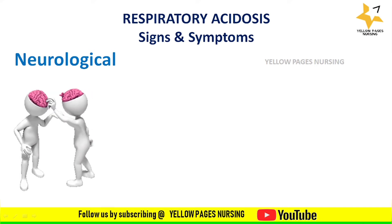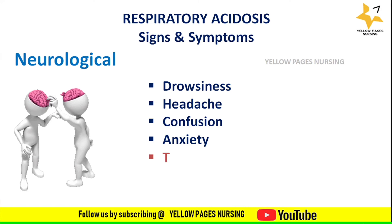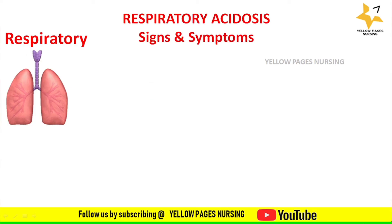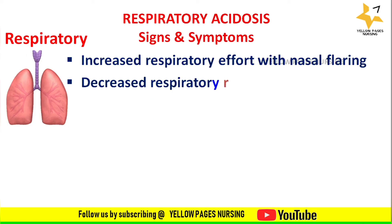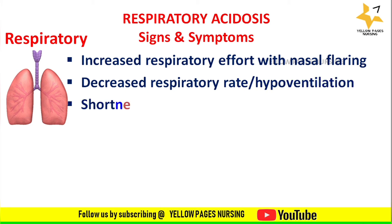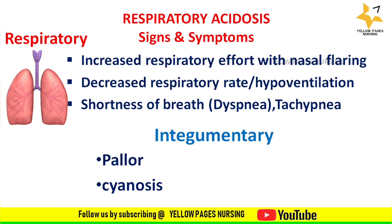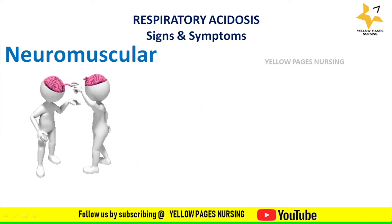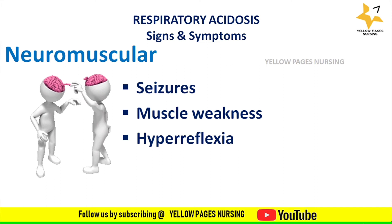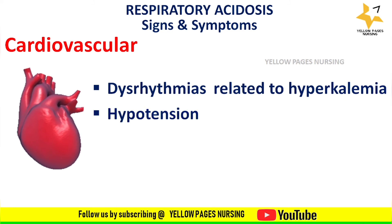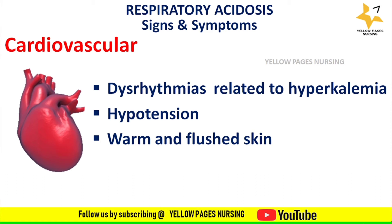Signs and symptoms of respiratory acidosis system-wise: Neurological symptoms include drowsiness, headache, confusion, anxiety, tremors, irritability, and increased intracranial pressure. Respiratory signs include increased respiratory effort with nasal flaring, decreased respiratory rate or hypoventilation, and shortness of breath — dyspnea or tachypnea. Integumentary symptoms include pallor and cyanosis. Neuromuscular signs include seizures, muscle weakness, and hyperreflexia. Cardiovascular symptoms include dysrhythmias related to hyperkalemia, hypotension, warm and flushed skin, and with sudden increase in PaCO2: increased pulse and respiratory rate, increased blood pressure, and mental cloudiness.